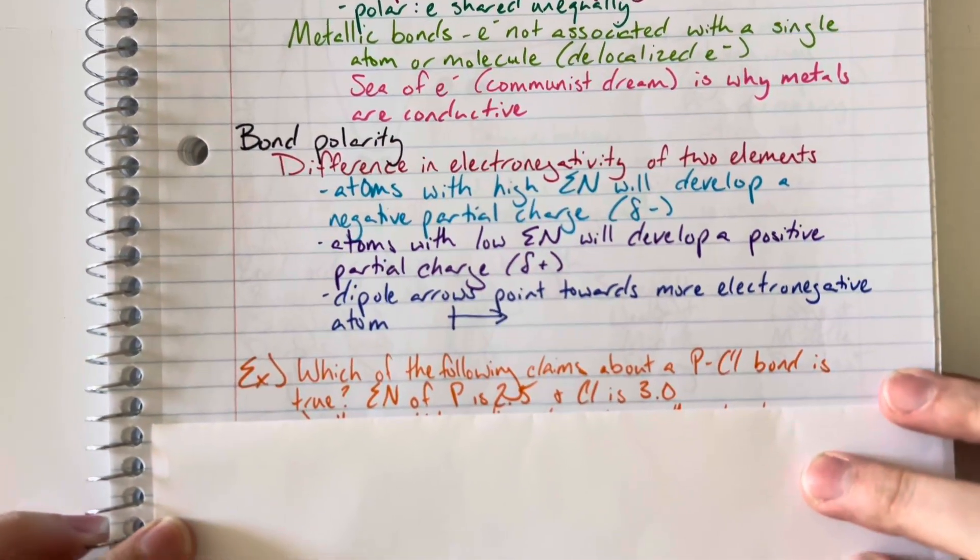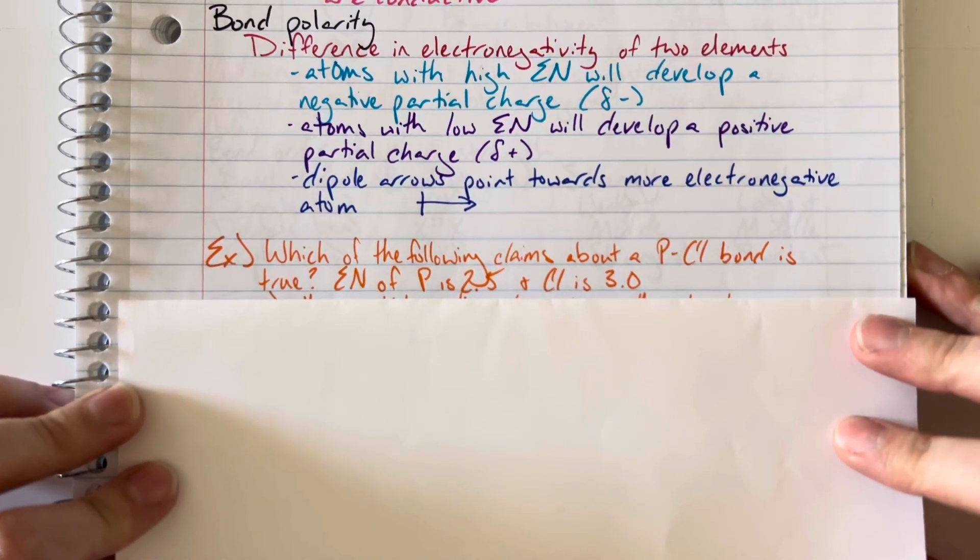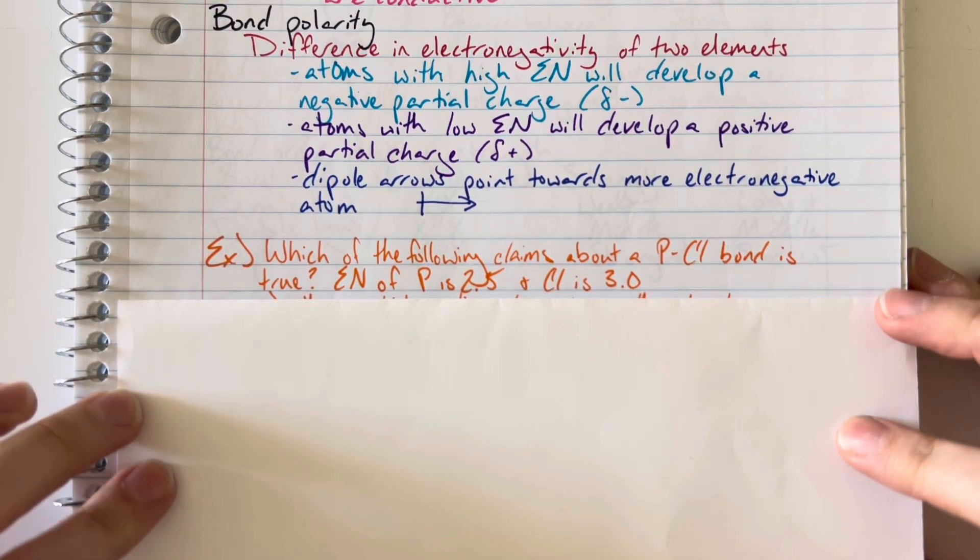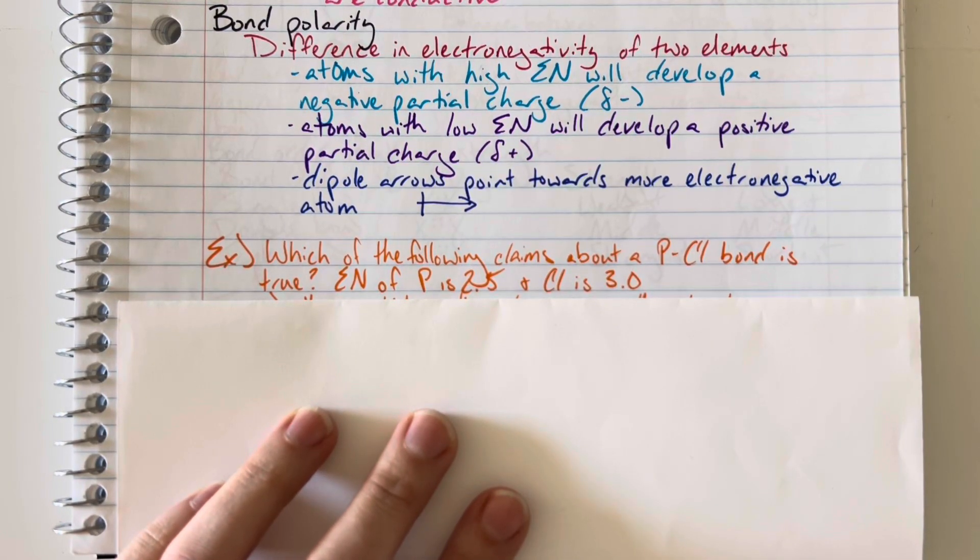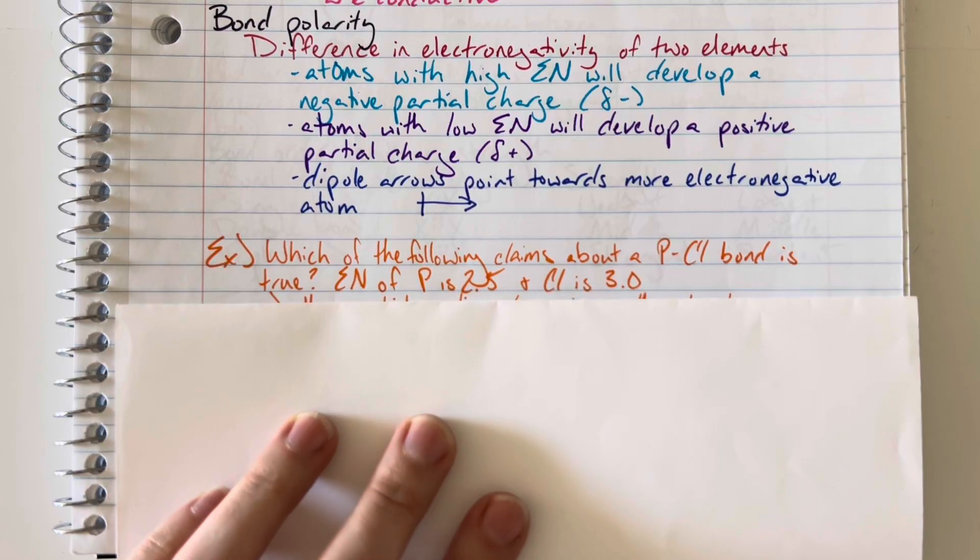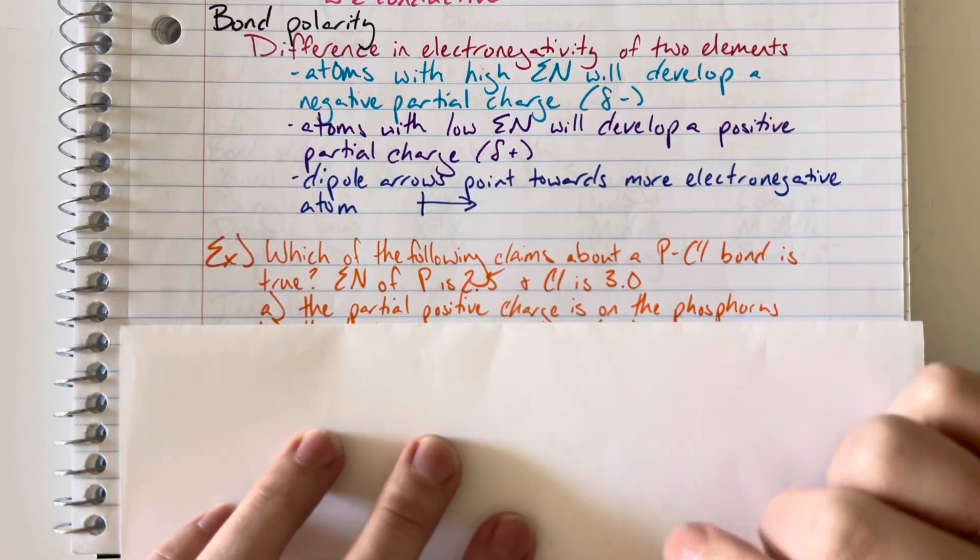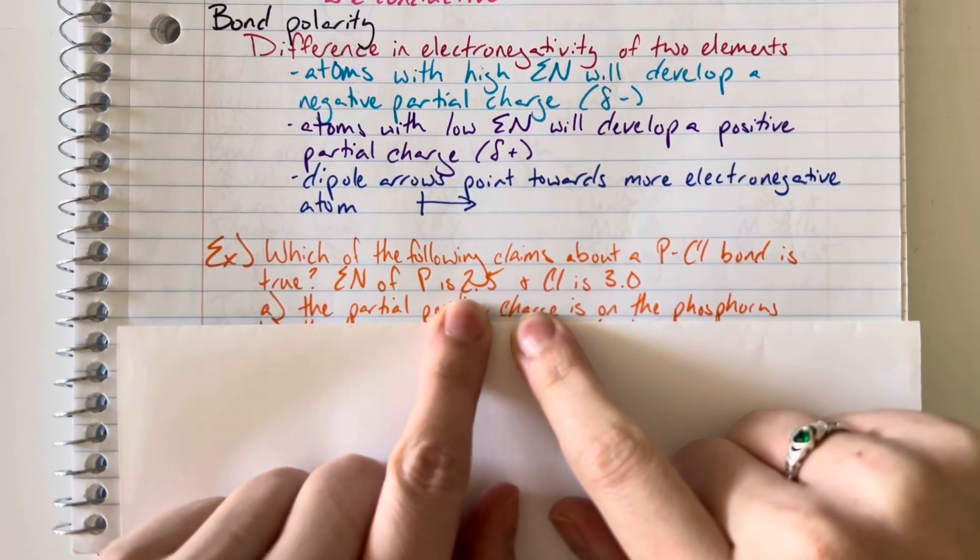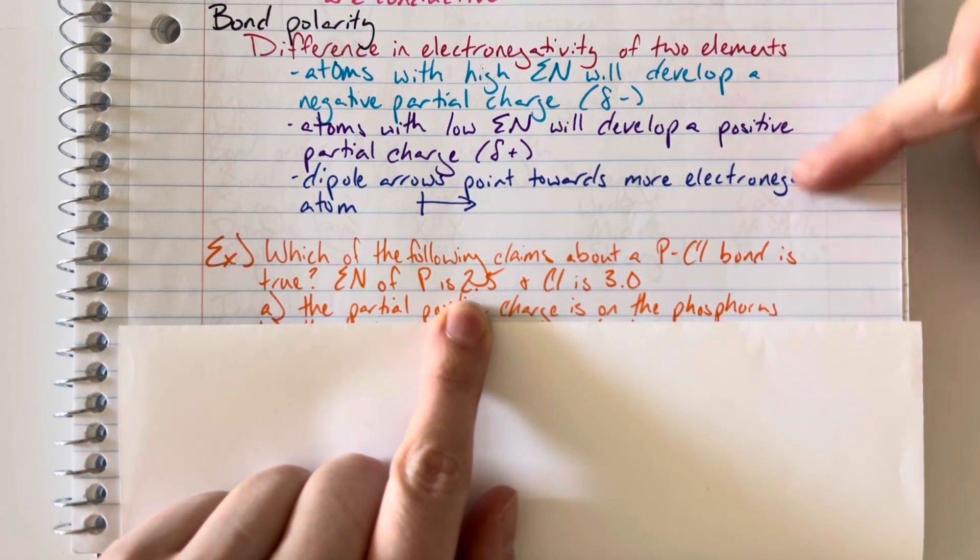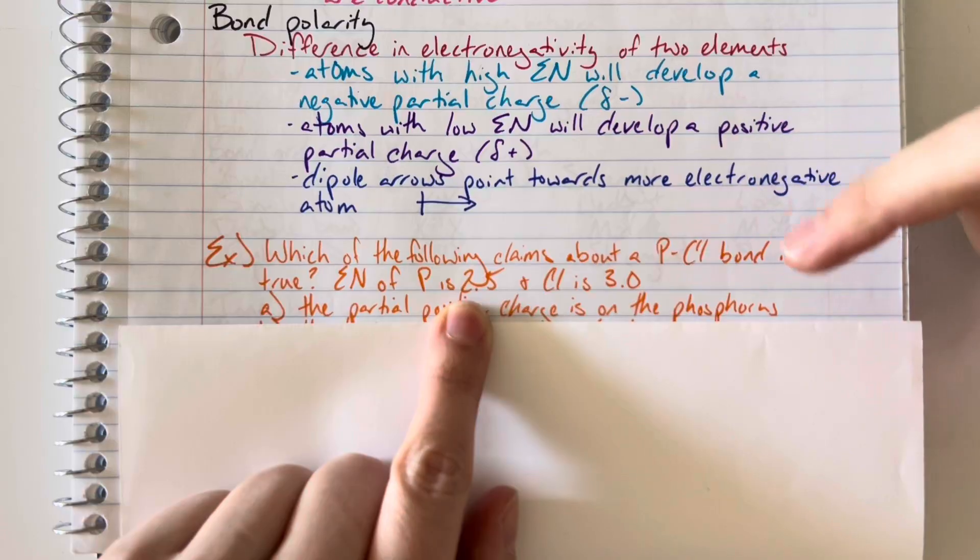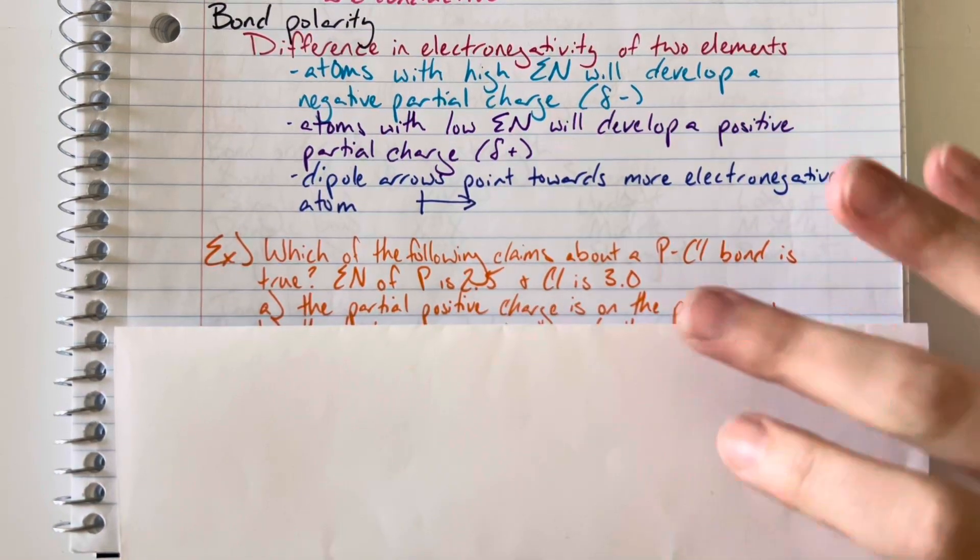In this example, which of the following claims about the phosphorus chlorine bond is true? The electronegativity of phosphorus is 2.5 and chlorine is 3.0. I'm going to look at the different options. I can see that phosphorus has a lower electronegativity than chlorine, so based off of my polarity notes, I know that it is more likely to have a partial positive charge than my chlorine would.